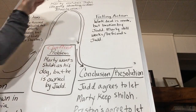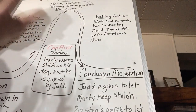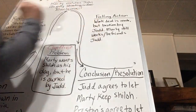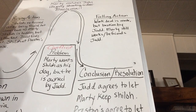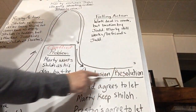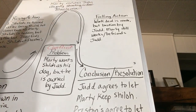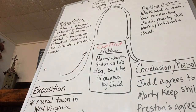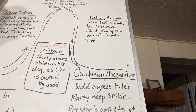Now we're going to have some falling action. They make a deal: if Marty works for Judd, he can pay off Shiloh and get to keep him. But Judd breaks the deal — he says there's no witness, so the deal is off. However, Marty still goes and works for him and befriends Judd. This is all falling action, leading us to wonder: is this resolution actually going to happen? Falling action happens after the climax.